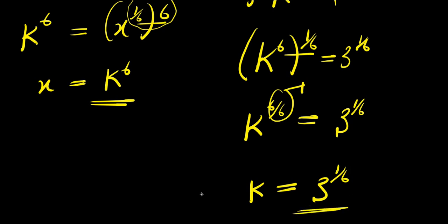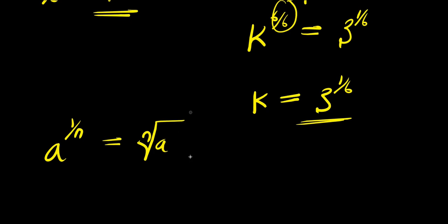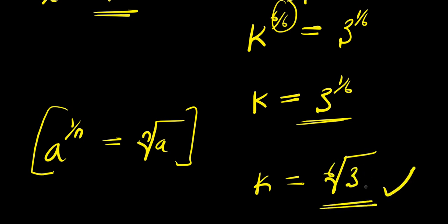Now remember, if you have a power 1 over n, this equals the nth root of a power 1, which is the same as a. So k equals 3 power 1 over 6 means k equals the 6th root of 3 power 1, which is the same as the 6th root of 3. That is our solution.